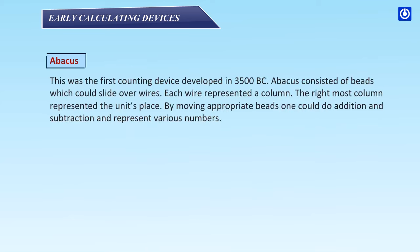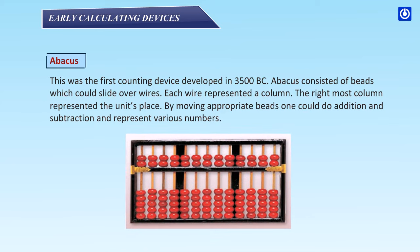Abacus: This was the first counting device, developed in 3500 BC. Abacus consisted of beads which could slide over wires. Each wire represented a column. The rightmost column represented the unit's place. By moving appropriate beads, one could do addition and subtraction to represent various numbers.